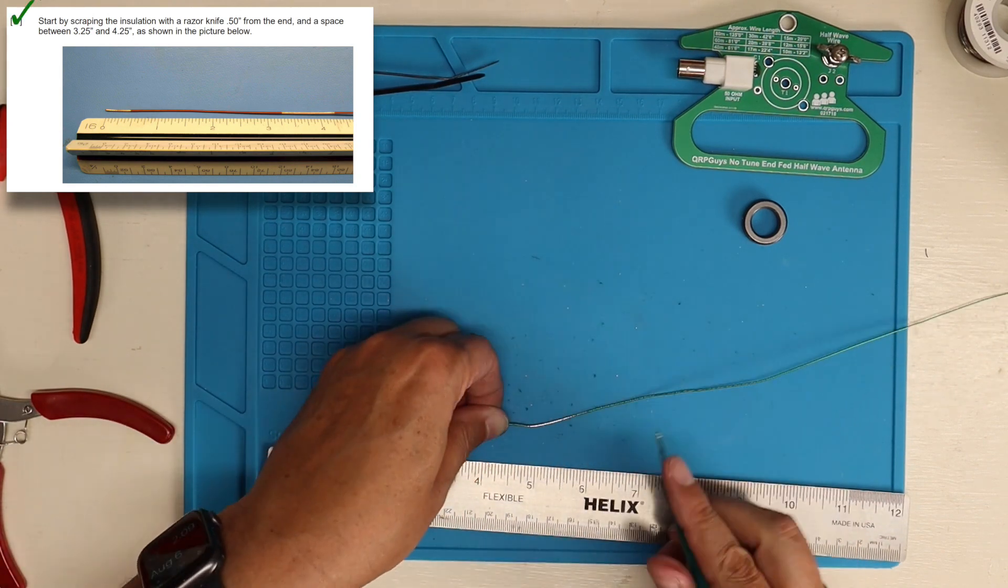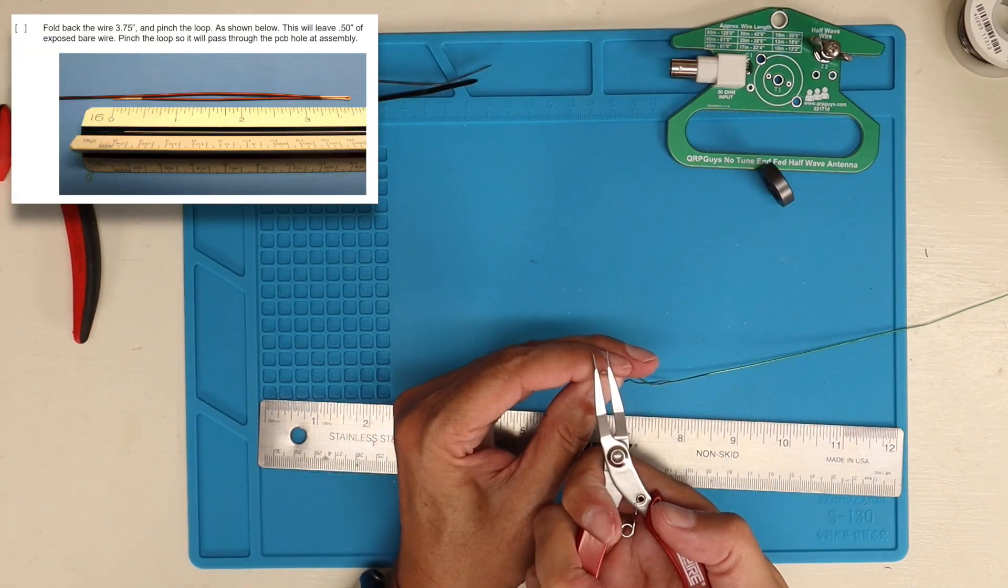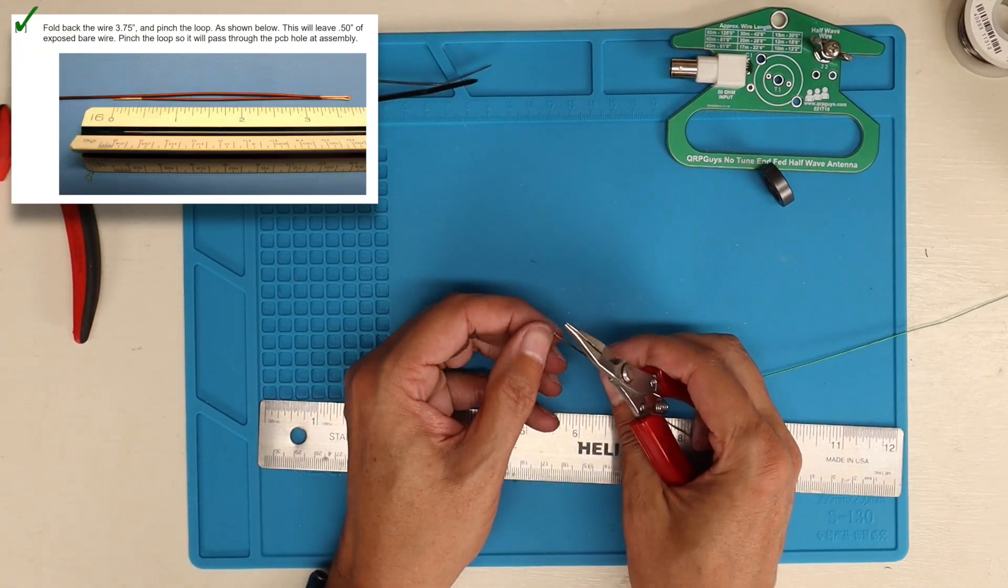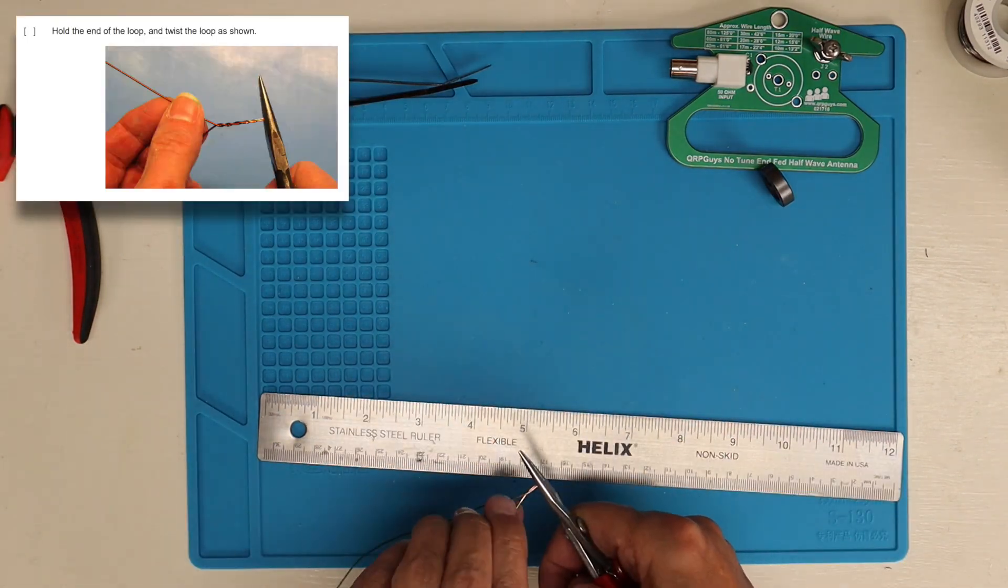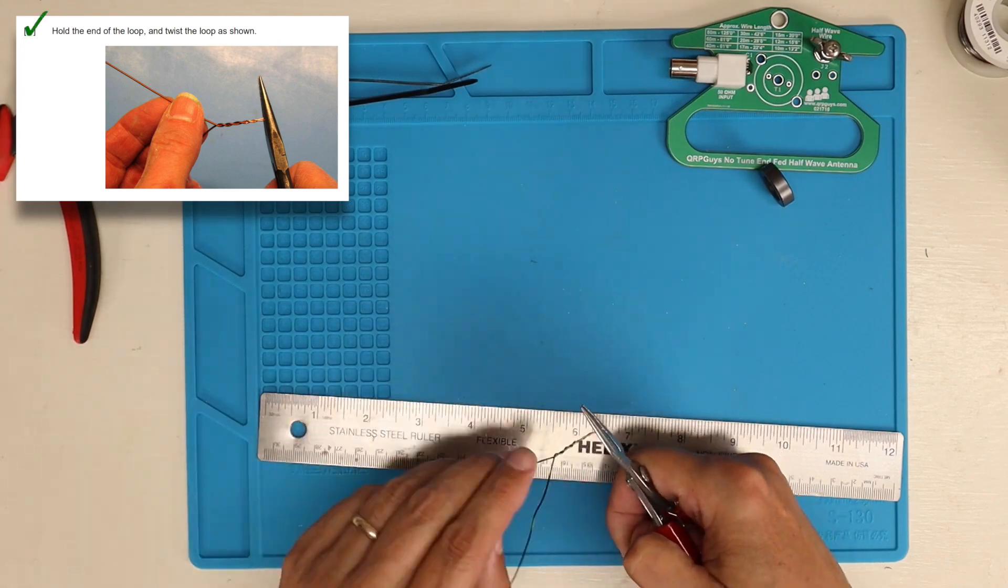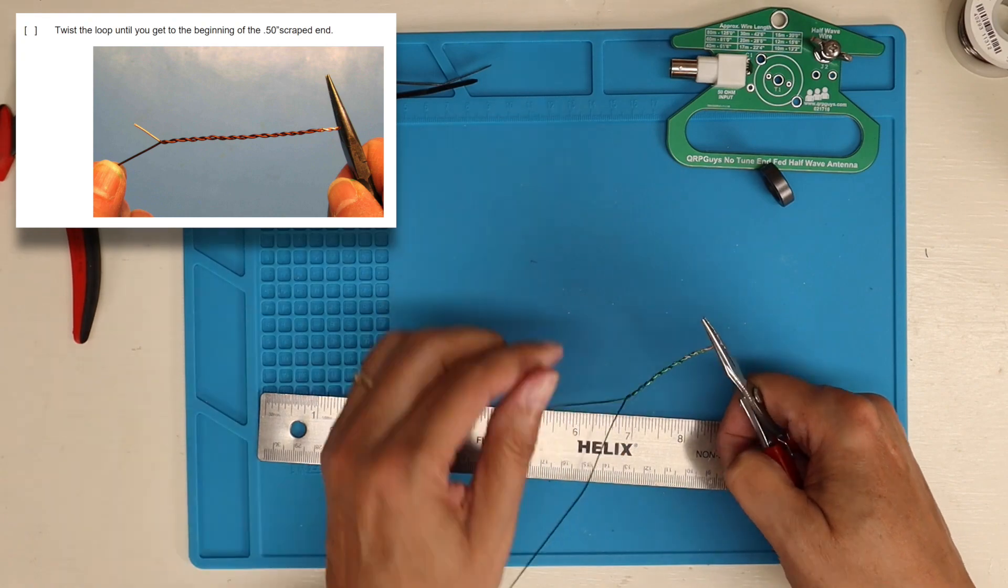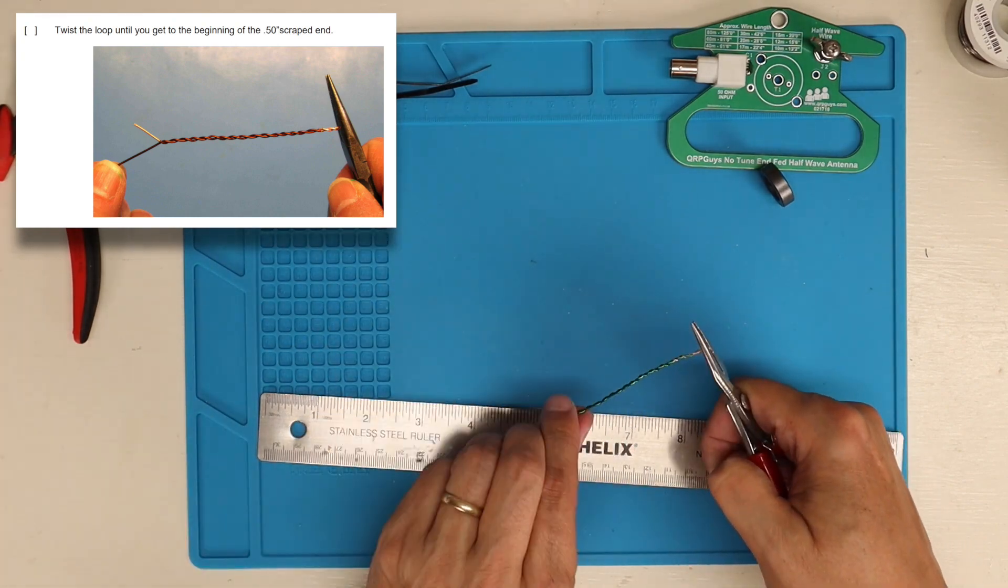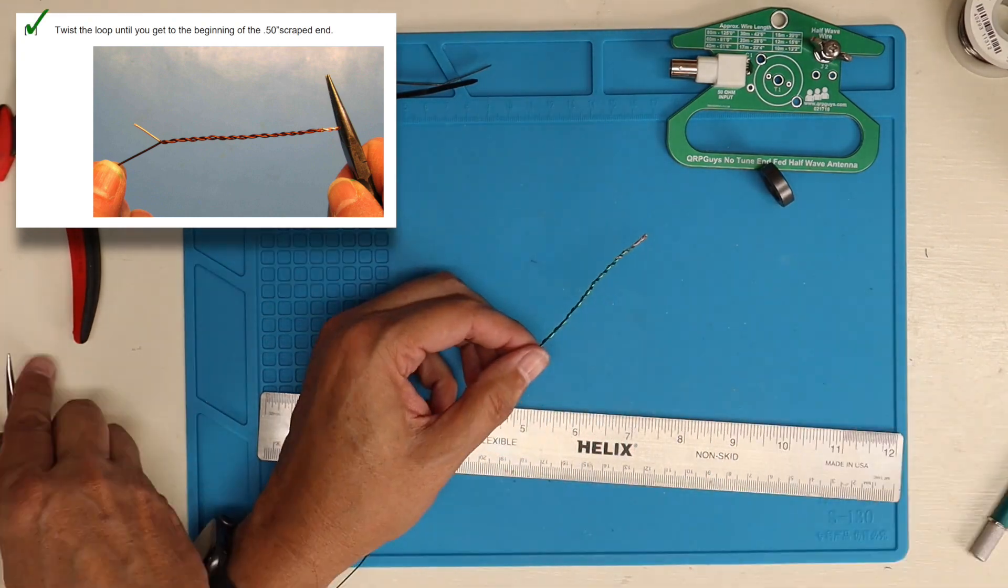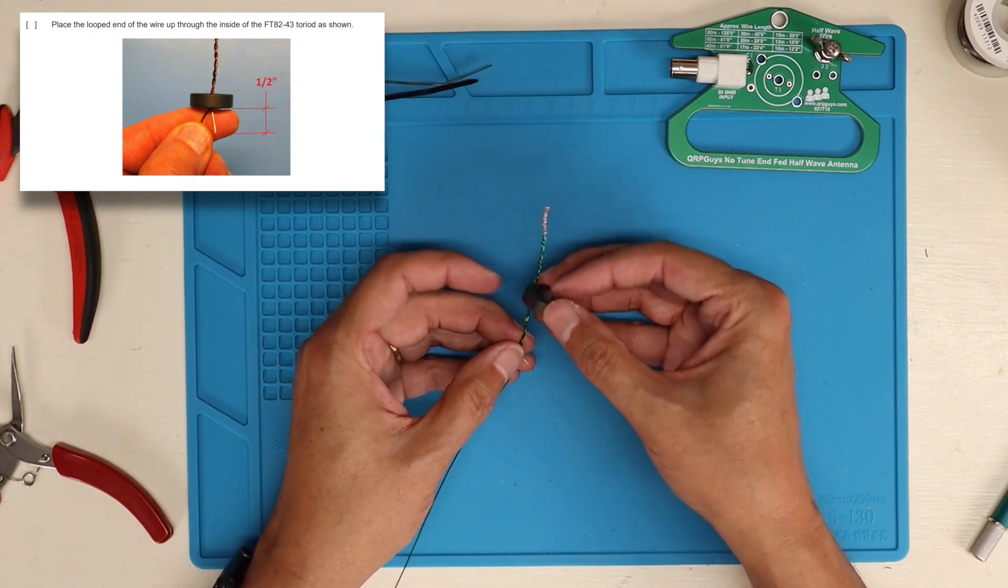Once you get all the enamel off, next thing is to fold it, and again following the directions. I went ahead and crimped it down pretty good so it's a nice flat area at the tip. And then you do the twist just as they describe. Once you get the twist, you twist it all the way down until you get down to that last little half inch of scraped wire on the loose end there. Once you do that, then we start winding the toroid.